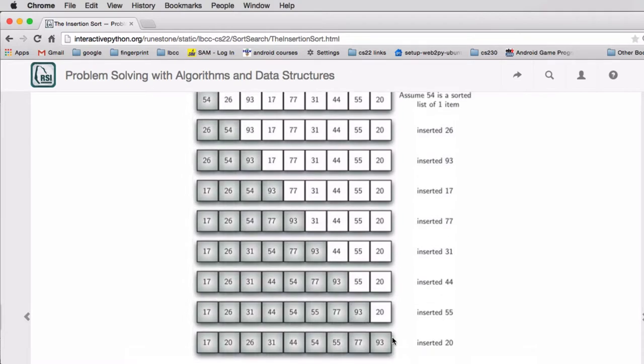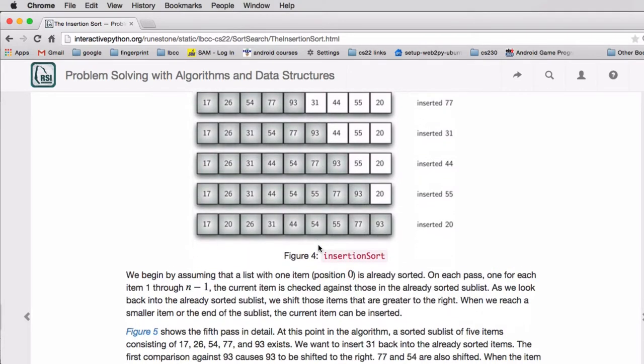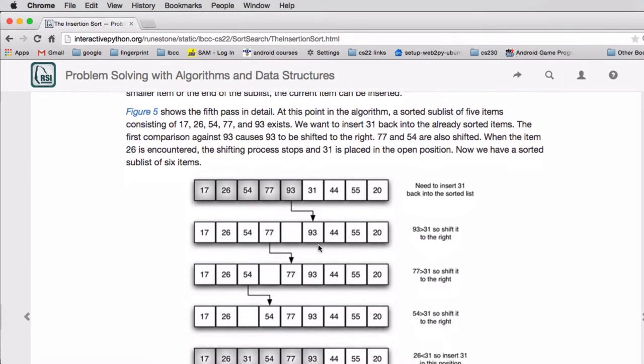So let's look at one step in detail. We're going to look at the step where it's inserting this 31. So first it remembers that as what's called the current value.